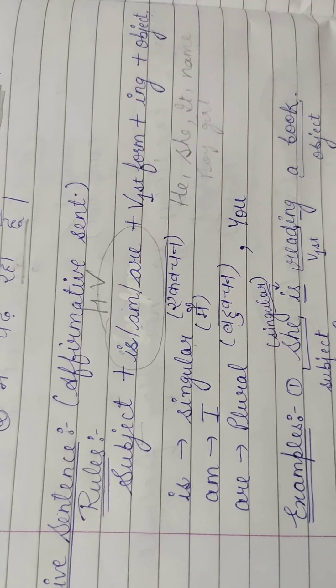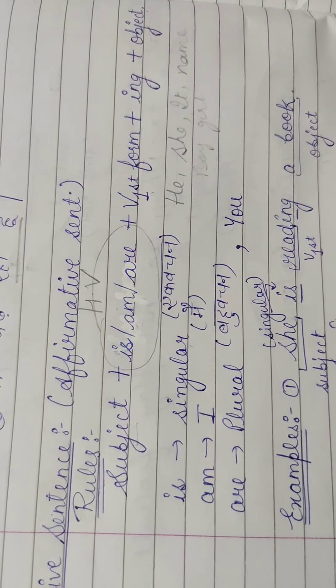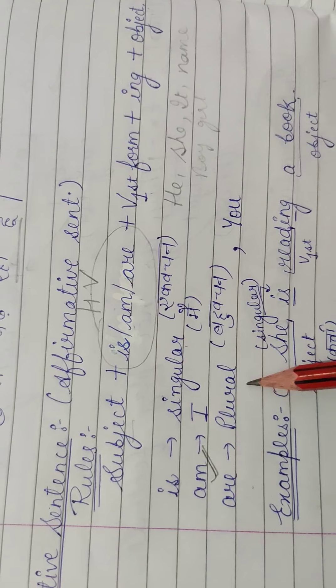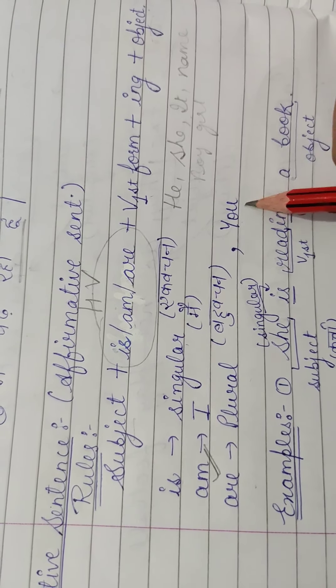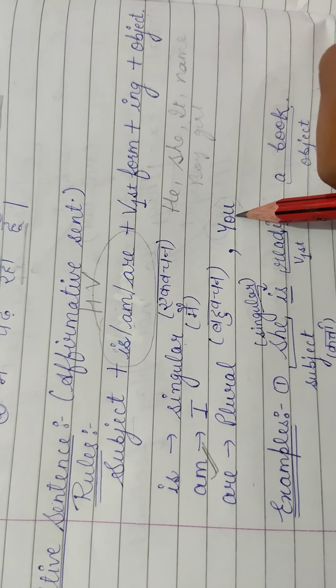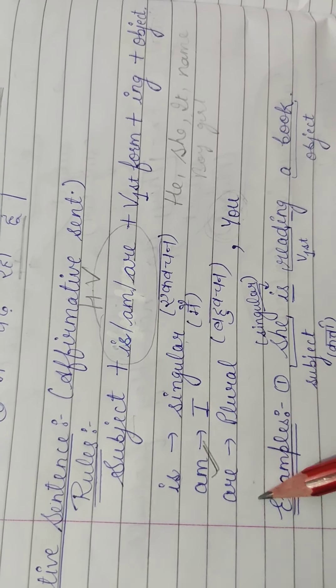Am kis ke saath aata hai? I ke saath. Jahaan per bhi I hoga, wahaan per har jage am aata hai. Are kis ke saath aata hai? Plural ke saath, ya fir you ke saath. You aapka singular hai, lelikin you ke saath - you kya hai, third person hai, is wajay se, is ke saath kya aata hai? Are aata hai.